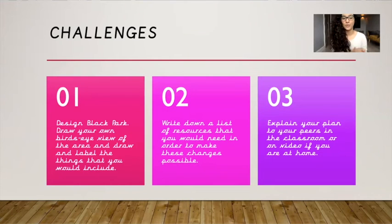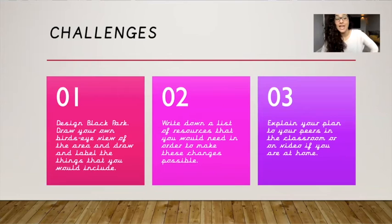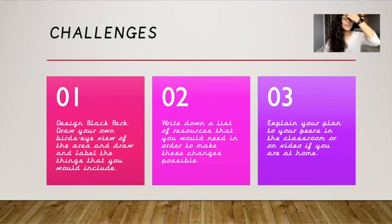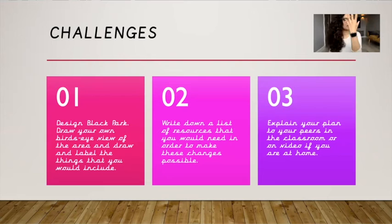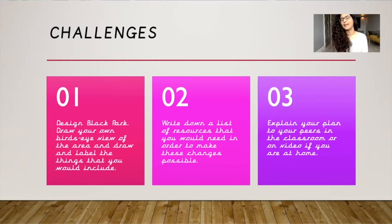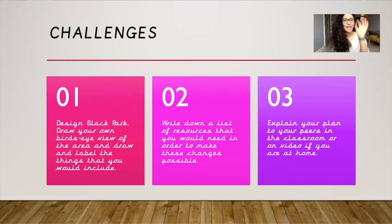Your three challenges: Task one — design Black Park. Draw your own bird's eye view of the area and draw and label the things you would include. Task two — write down a list of resources you would need to make these changes possible. Task three — explain your plan to your peers in the classroom, or on video if you are at home. This encourages you to use your presenting skills. Only I will see it on Tapestry, so please don't be nervous. If you're shy, you're welcome to just post a picture of your design instead.